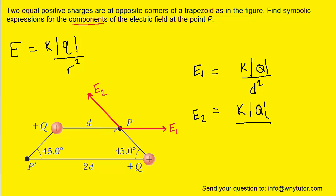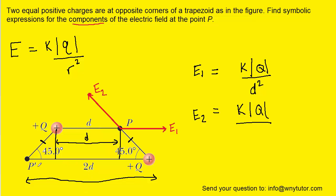To find that distance, we need to understand the geometry of this trapezoid. The trapezoid has 45-degree base angles, which means its two legs are equal in length. If we drop a vertical line straight down on each side, the distance between those lines is D. The entire length of the large base is 2D. Subtracting D from 2D leaves D, so the total length of the two outer segments is D, making each one D/2.